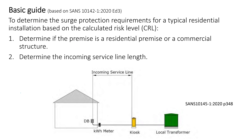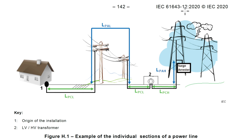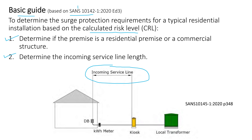Once these factors have been considered, you can move to the basic guide. If you still have not reached a conclusion about whether you need an SPD, you can follow the basic guide under SANS 10142. This guide aims to determine the surge protection requirement for a typical residential or commercial structure based on a calculated risk level. The first step is to determine if the premises is residential or commercial. The second step is to determine the incoming service line as shown in the diagram, per IEC 61643.